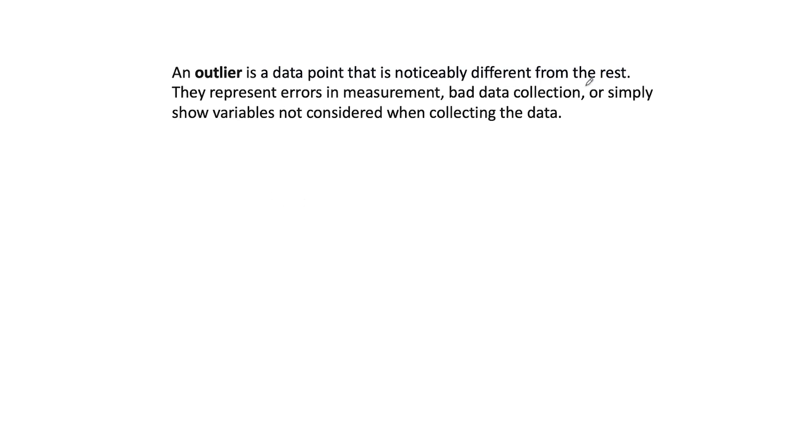An outlier is a data point noticeably different from the rest. You're going to get this. This will be an interview question. This is something everyone in machine learning should know. They represent errors in measurement, bad data collection, or simply show variables not considered when collecting the data.